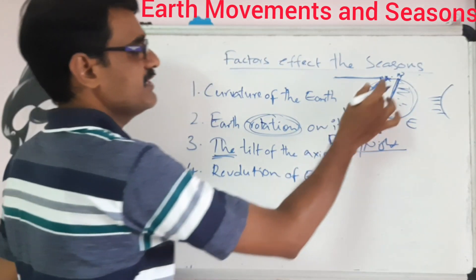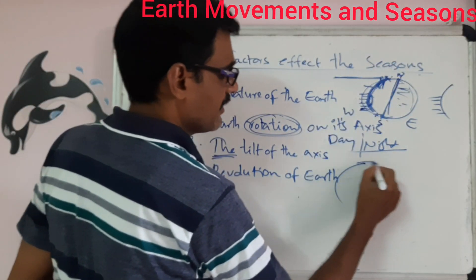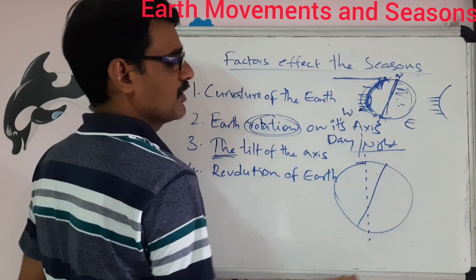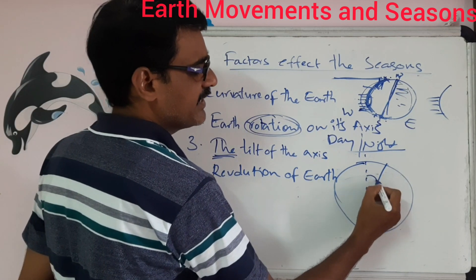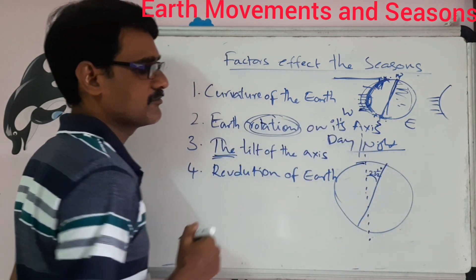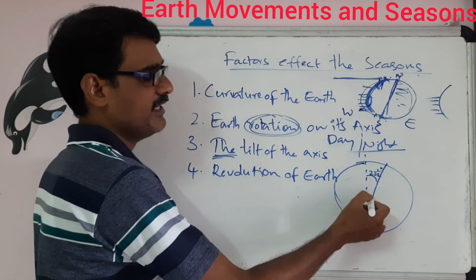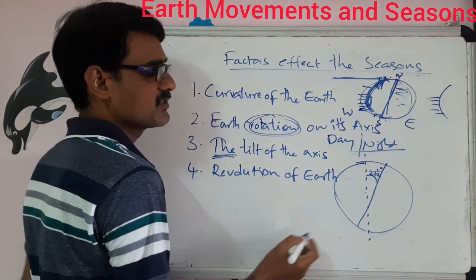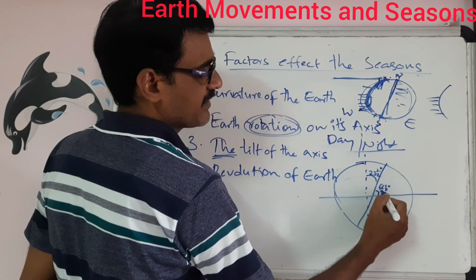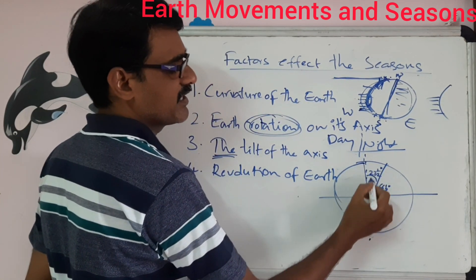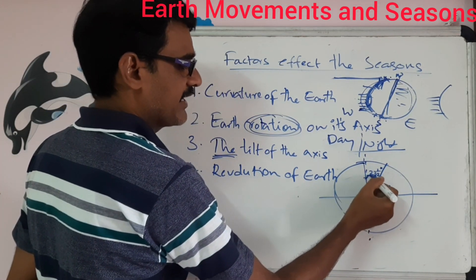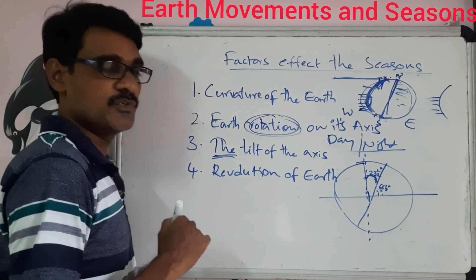The third factor is the tilt of the axis. The axis is tilted — it makes an angle of 23.5 degrees from the vertical, and 66.5 degrees from the orbital plane.